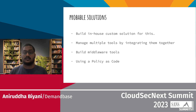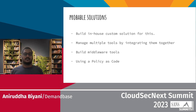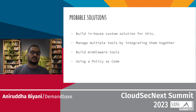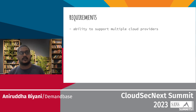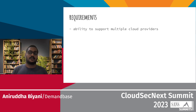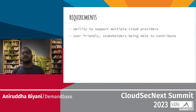Before picking out a solution, we wanted to highlight the non-negotiable requirements. Some of them were: the ability to support multiple cloud providers. As you saw earlier, we were in AWS, GCP, and had a small workload in Azure as well. So supporting multiple cloud providers was significant and non-negotiable for us.